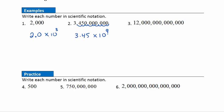Example 3: 12 trillion in scientific notation is 1.2 times 10 to the — let's figure that out. Here's where the decimal is and here's where it needs to be. Counting the places: one, two, three, four, five, six, seven, eight, nine, ten, eleven, twelve, thirteen places — so times 10 to the 13th power.